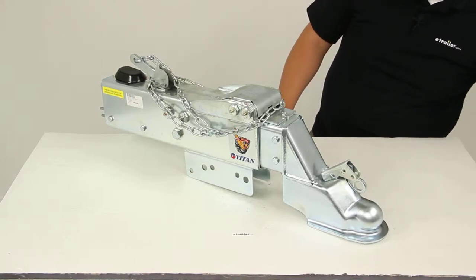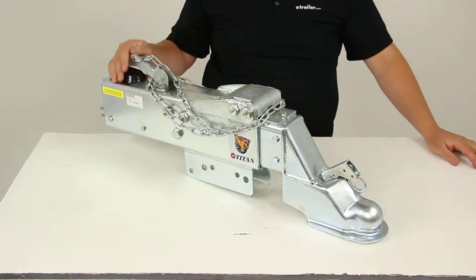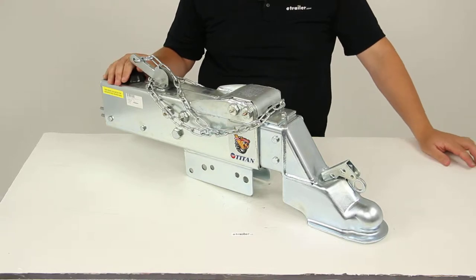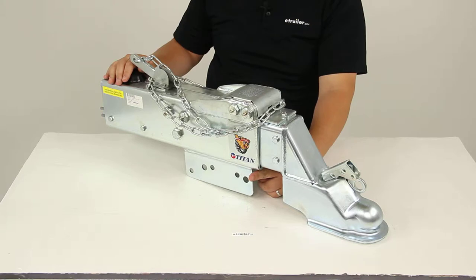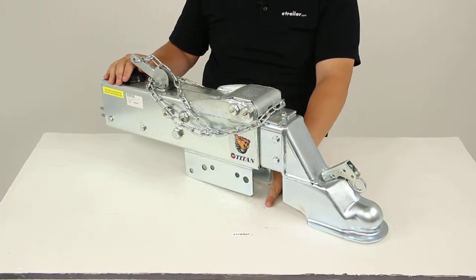Today we'll be reviewing part number T4750700. This is the Titan Zinc Plated Brake Actuator with the built-in drop. It's going to provide a three-inch drop measuring from this point here to the base of the bottom of the coupler.